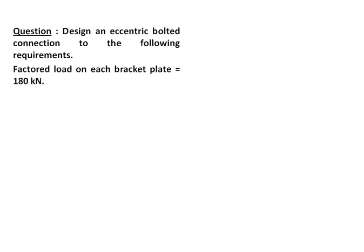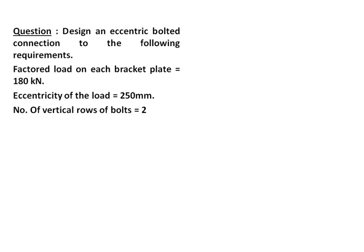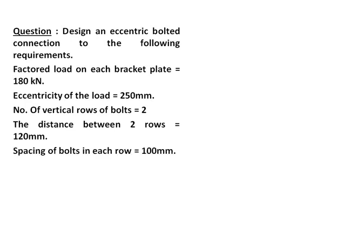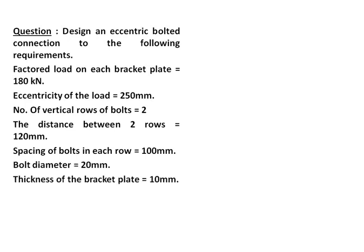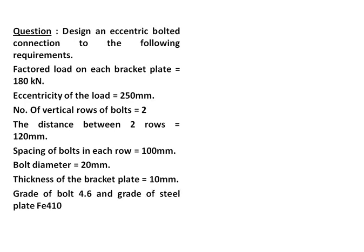The requirements are: the factored load on each bracket plate is 180 kN, eccentricity of the load is 250 mm, number of vertical rows of bolts is 2, distance between two rows is 120 mm, spacing of the bolt in each row is 100 mm, bolt diameter is 20 mm, thickness of the bracket plate is 10 mm.